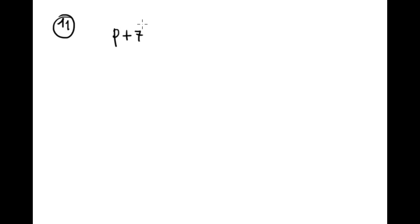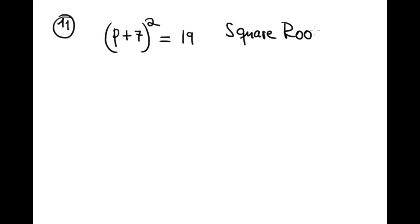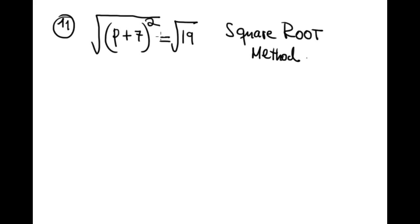Next question is 11: (p + 7)² = 19. In this case you apply the square root method — take the square root of both sides. The square roots cancel, leaving p + 7 equal to plus or minus square root of 19. Because 19 is a prime number, we cannot simplify any further.